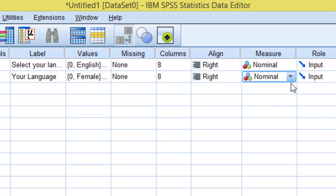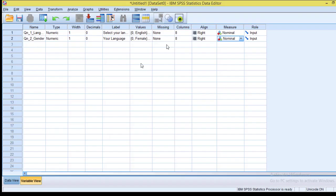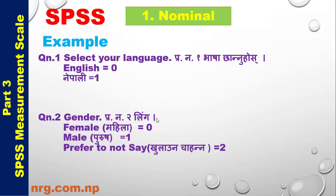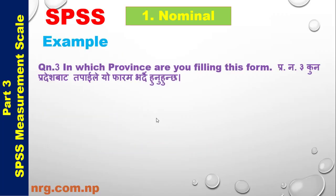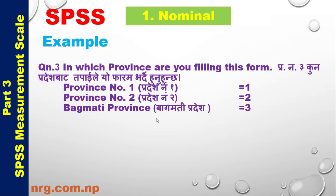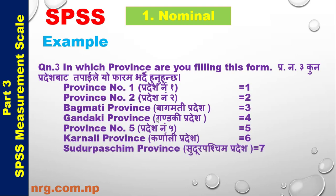After setting Question 2 as Nominal, Question Number 3: In which province are you filling this form? Codes: 1 = Province Number 1, 2 = Province Number 2, 3 = Bagmati Province, 4 = Gandaki Province.